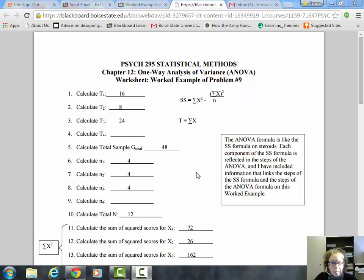Looking at the worksheet, I've transferred the T values for each group: 16, 8, and 24. When you add those up, that's where the grand total of scores comes from. Before getting into the ANOVA formula, take a look at what I've put down here. The ANOVA formula is like the sum of squares formula on steroids—each component of the sum of squares formula is reflected in the ANOVA process as we work through the different phases.